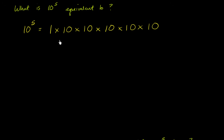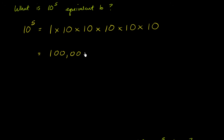What's this going to be? Well, 1 times 10 is 10. 10 times 10 is 100. 100 times 10 is 1,000. 1,000 times 10 is 10,000. 10,000 times 10 is 100,000. So this is going to be 100,000.